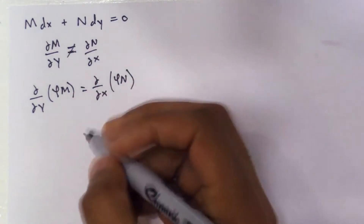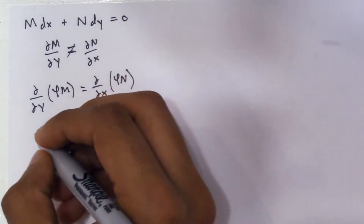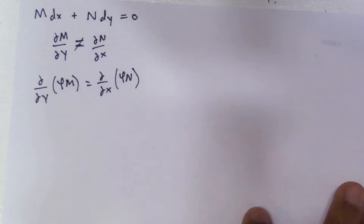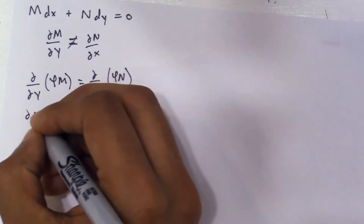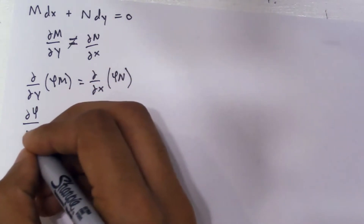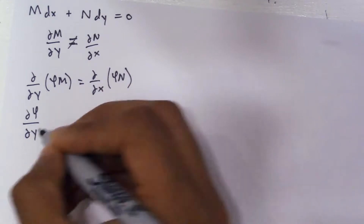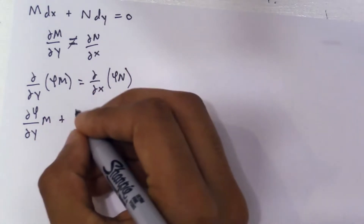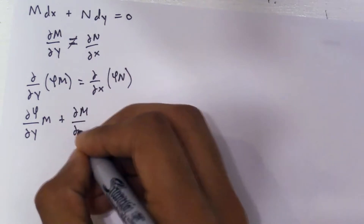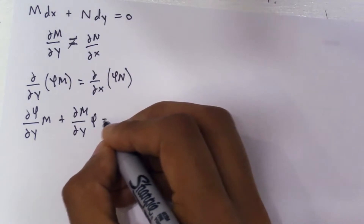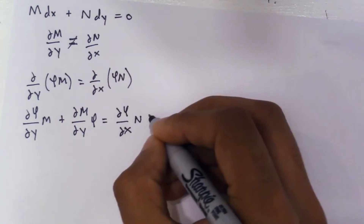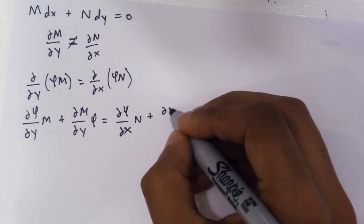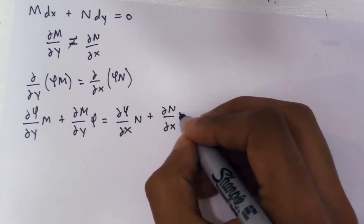What we're going to do is basically apply the product rule. Take the derivative of phi times M with respect to y: you're going to get the partial of phi with respect to y times M, plus the partial of M with respect to y times phi, equals the partial of phi with respect to x times N, plus the partial of N with respect to x times phi.